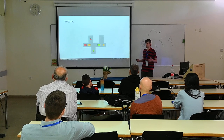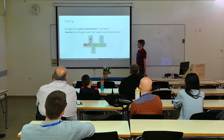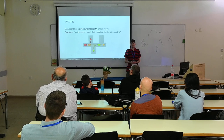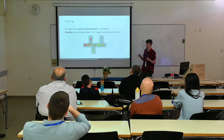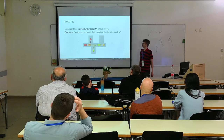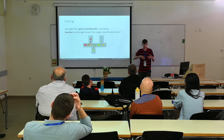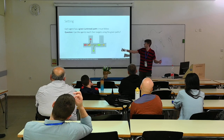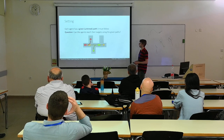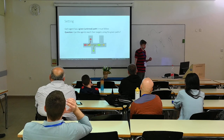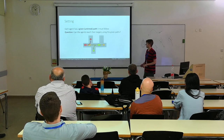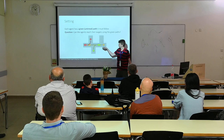This is a more standard way of looking at these problems. We further require, in our setting, that each agent follows a given path as well. The path is not a trajectory — it's just a path the agent must follow. And we ask the question: can the agents reach their targets using the given paths? The arrows here represent those given paths.